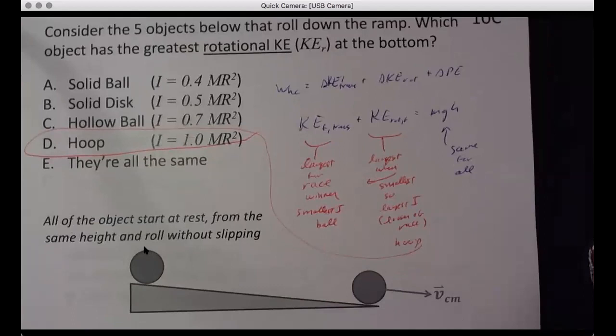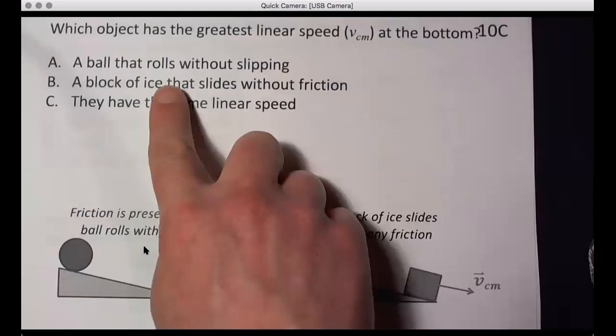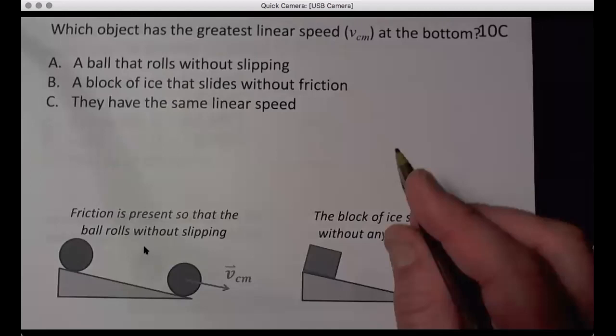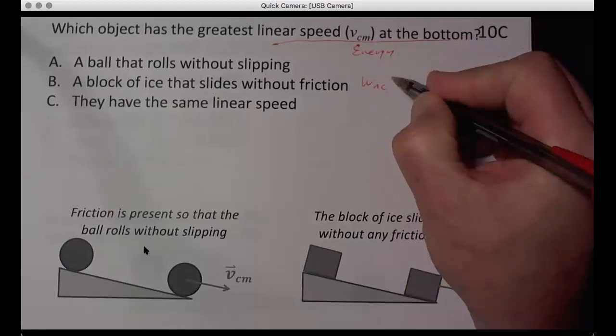So let's now look at this one. Which has the greatest speed at the bottom, rolling without slipping, sliding down, not rolling at all without friction, or are they both the same? Again, we think in terms of linear speed at the bottom, that's energy. So work non-conserving is delta KE plus delta PE.